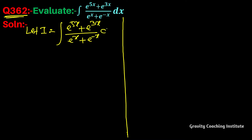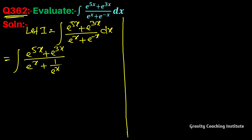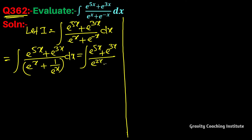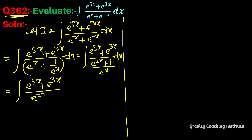First, we multiply numerator and denominator by 1/e^x and then take the LCM. This gives us: integration of (e^5x + e^3x) / (e^2x + 1) into e^x dx.